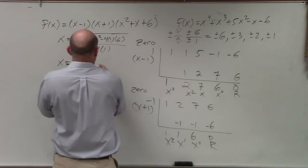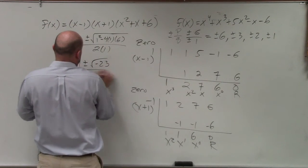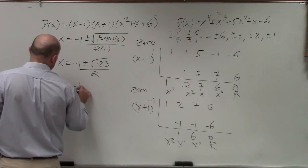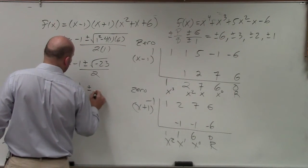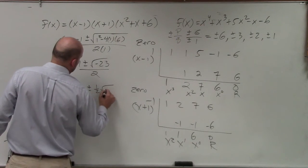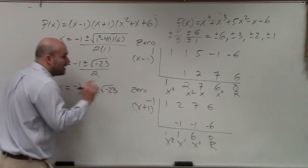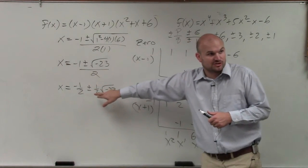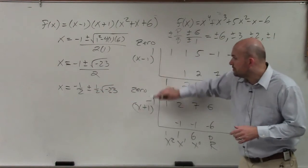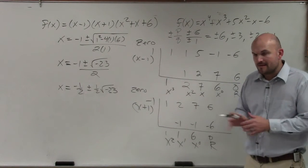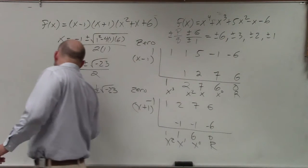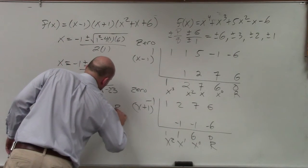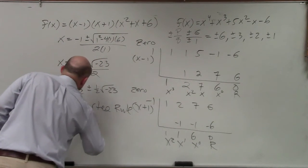So that gives 1 squared, and you get the square root of negative 23 over 2. You can also write that as x equals negative 1/2 plus or minus 1/2 times the square root of negative 23. So there are two complex solutions and two real zeros.